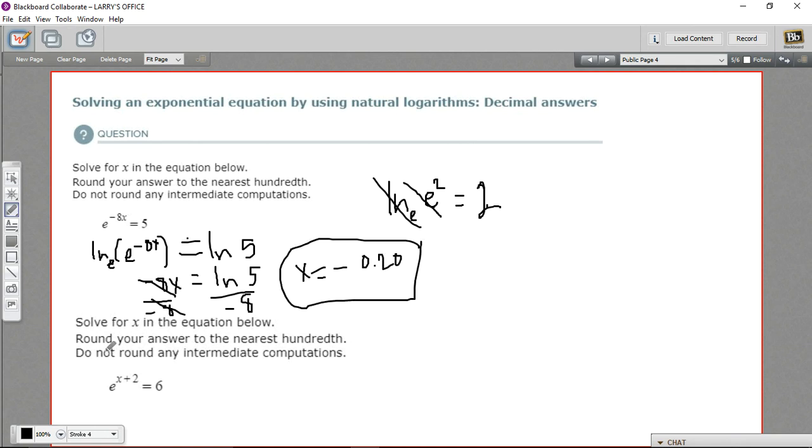Let's try one more just for practice. We've got e to the x plus 2 equals 6. So we're going to take the natural log of both sides.